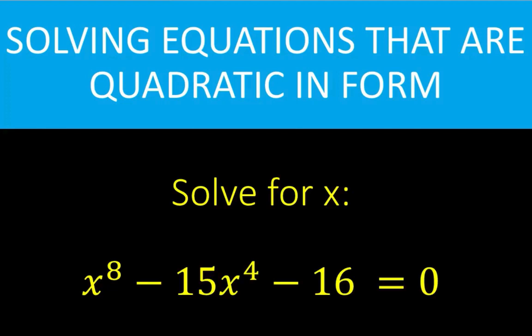Let's say we are given x to the 8 minus 15x to the 4 minus 16 equals 0, and we are asked to solve for x. Notice that this equation is an equation that is quadratic in form. We know this equation is quadratic in form because if this exponent 8 is 2 and this exponent 4 is 1, then we have a quadratic equation.